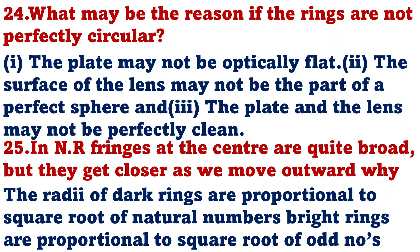In Newton rings, rings at the center are quite broad but they get closer as we move outward. Why? The radius of dark rings are proportional to square root of natural numbers. Bright rings are proportional to square root of odd natural numbers.